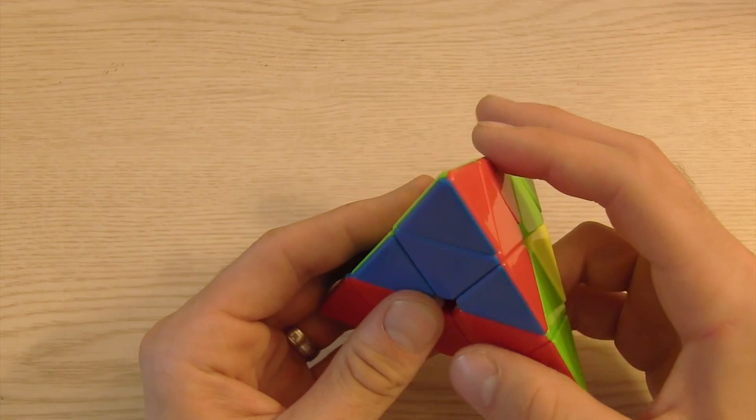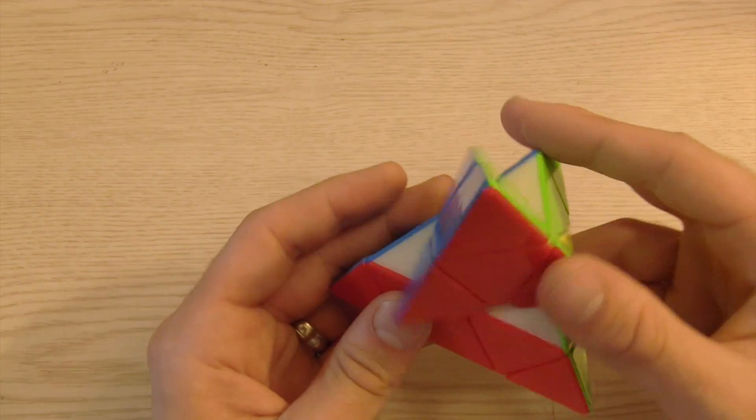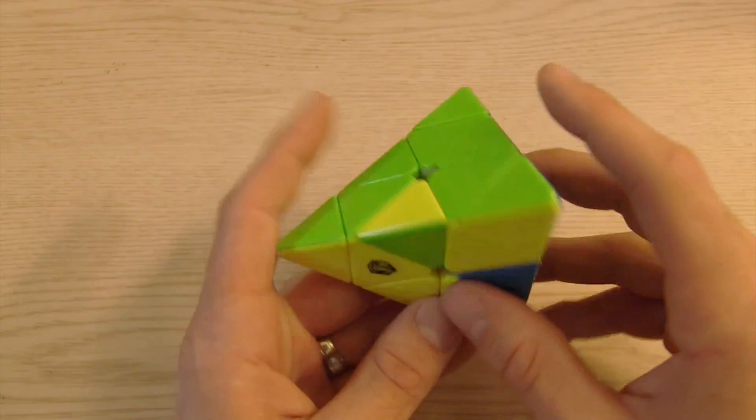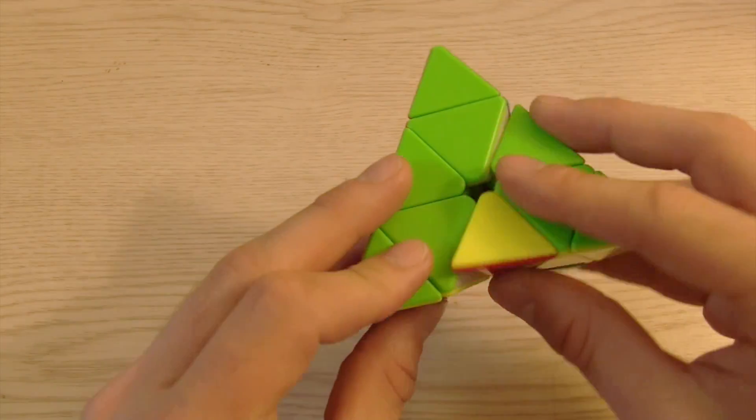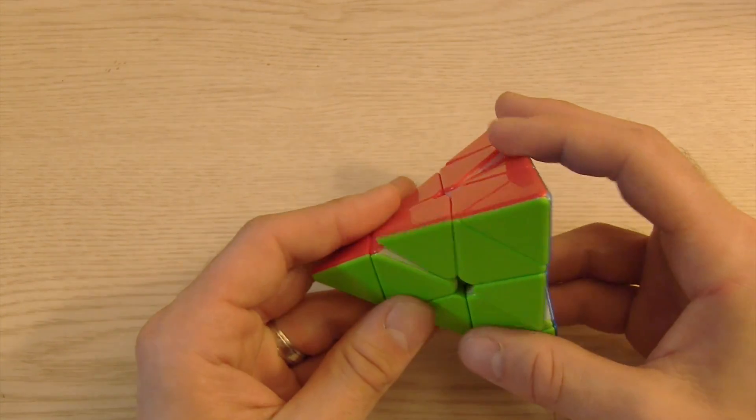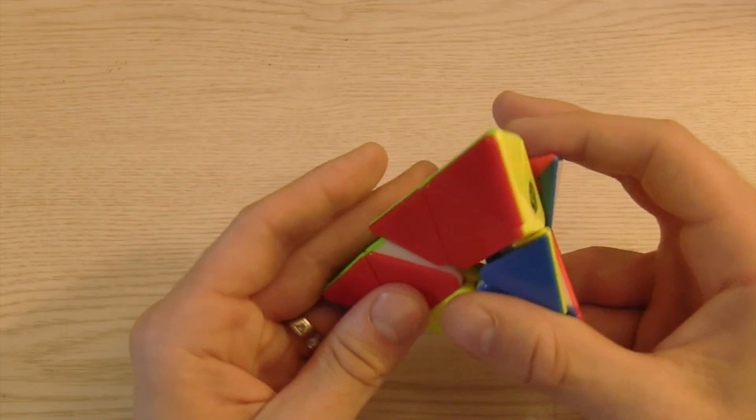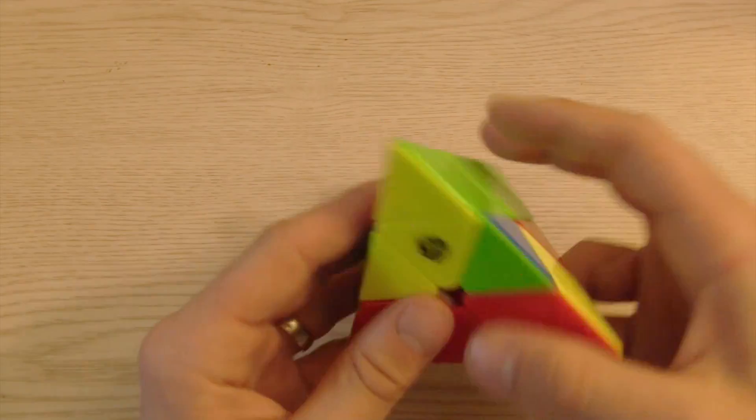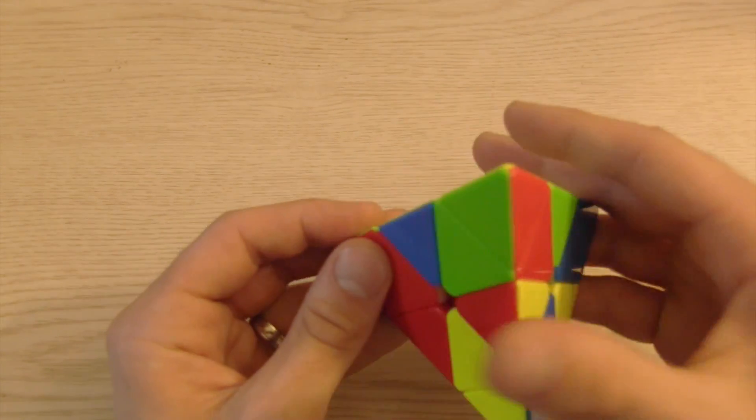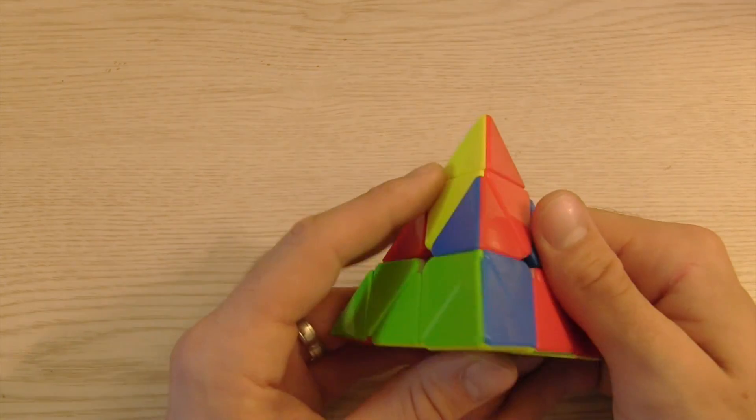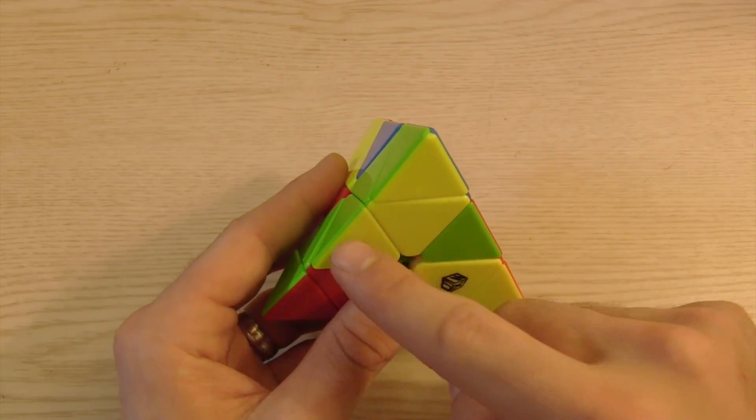You usually have to solve that afterwards. I'll orient the top layer and then solve this final one with an algorithm. And there we go. Let's walk this through a little bit slower. So first let's scramble it again. I'm just randomly scrambling it here, not really focusing too much on it. Okay, so again we intuitively solve two edges.